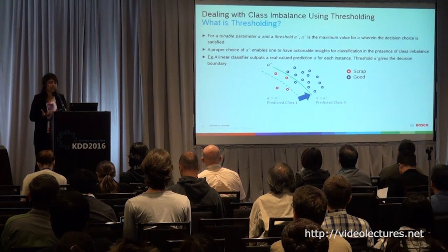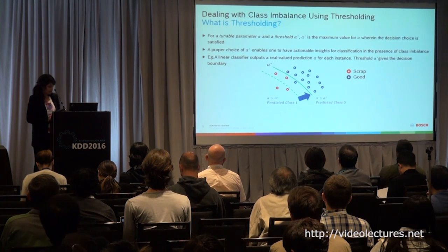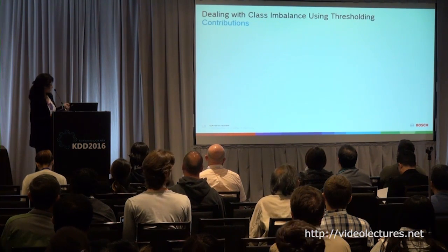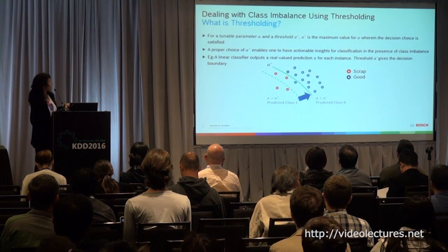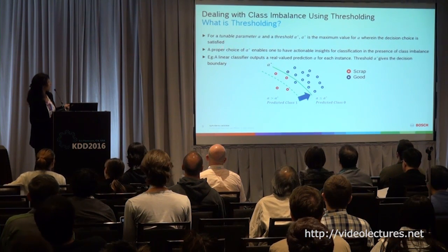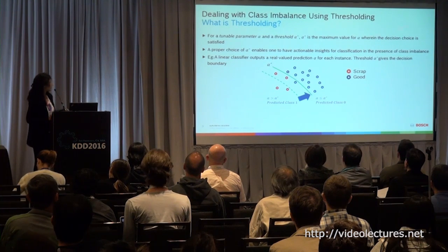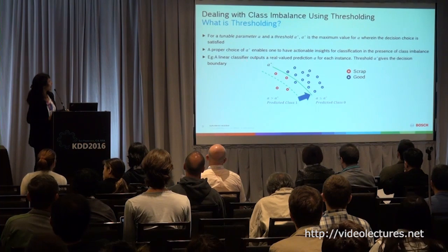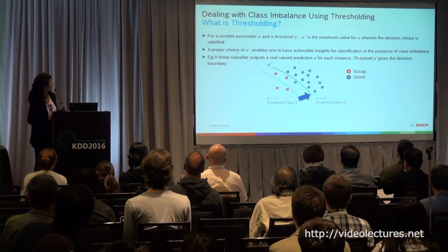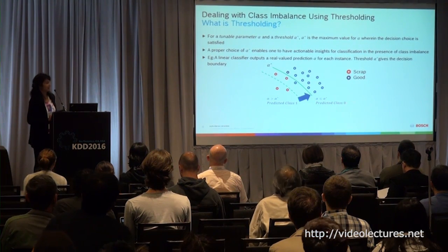The concept of thresholding is very intuitive. For a tunable parameter alpha and a threshold alpha star, alpha star is the maximum value for alpha wherein a decision choice is satisfied. A proper choice of alpha star enables us to take actionable insights. Taking the example of a linear classifier — say it outputs a real-valued prediction alpha for each instance — the threshold alpha star gives us a decision boundary: if alpha is more than alpha star, predicted class is 1; if alpha is less than alpha star, predicted class is 0.